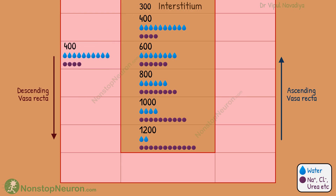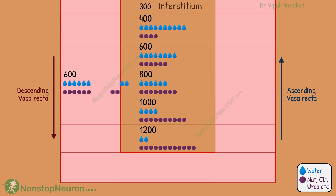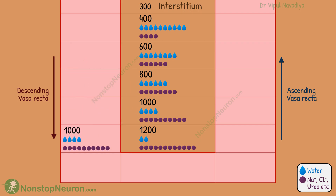When this blood moves ahead, it encounters even higher osmolarity. So the same process of water exit and solute entry happens here also, increasing the osmolarity even further. This way, the osmolarity of plasma keeps on increasing as the blood goes deeper and deeper. At the tip, it reaches about 1200 milliosmoles per liter.